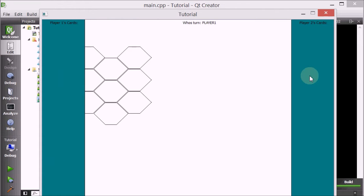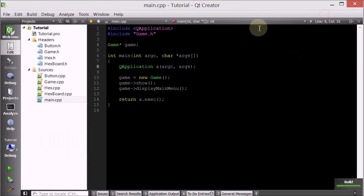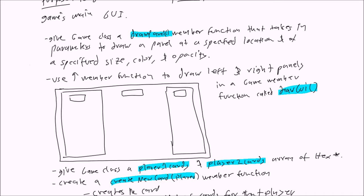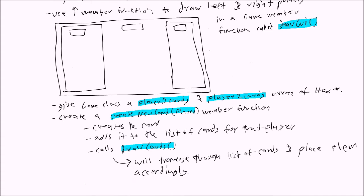So let's go ahead and generate a bunch of cards. Let's look at our plan sheet to see how we're going to do this. Recall that we're going to give the game class two methods: player1Cards and player2Cards. This list will hold the cards that each player has. And we're going to have another method called createNewCard that will create a new card for the specific player and add it to the respective list. And then we're going to use drawCards, which will traverse through this list and actually draw them.